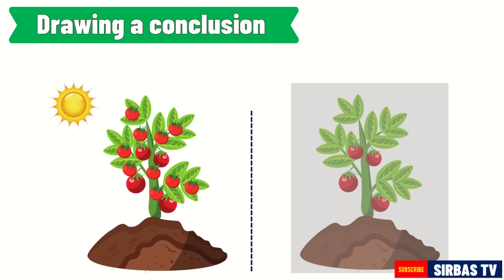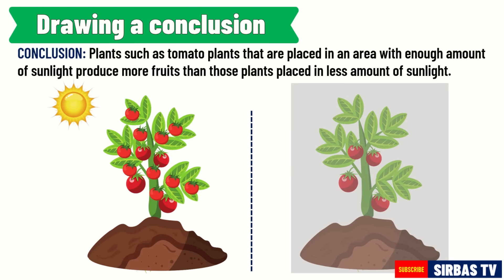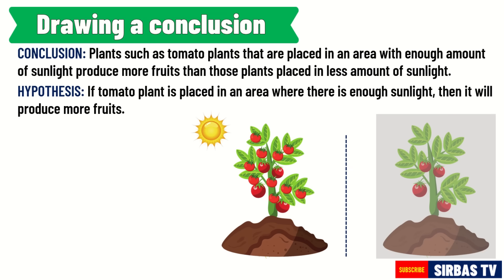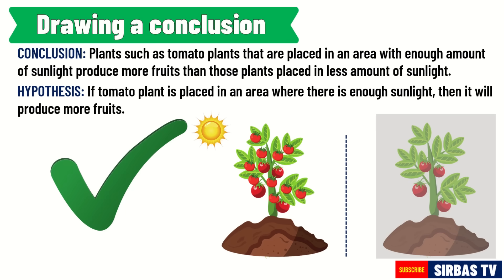For our example, the possible conclusion to our problem is: plants such as tomato plants that are placed in an area with enough sunlight produce more fruits than those plants placed in less sunlight. Based on this statement, we can say that our hypothesis — if a tomato plant is placed in an area where there is enough sunlight, then it will produce more fruits — is correct.